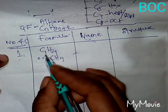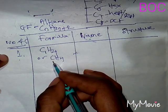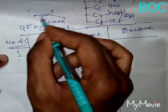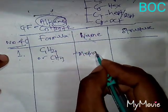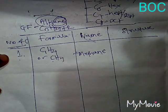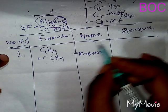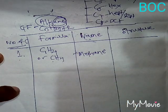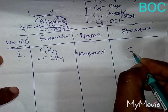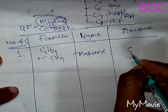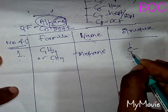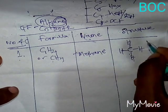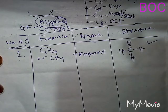The name is: the number of carbon atoms here is 1, so the prefix is 'meth', and since this is the alkane group the suffix is 'ane', so the name is methane. For the structure of methane or CH4, there is only one carbon atom — put the single carbon atom, and since carbon is tetravalent, meaning it forms four bonds, there will be four hydrogen atoms. This is the structure of methane, the first compound of the alkane group.